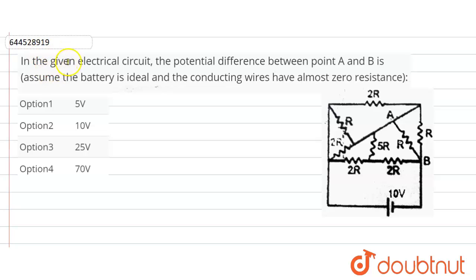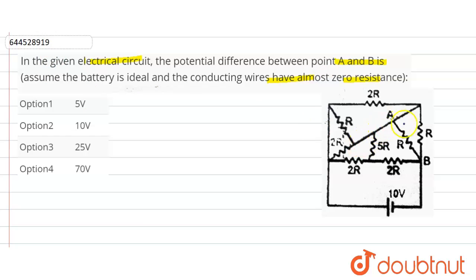In a given electrical circuit, the potential difference between A and B is to be found. Assume the battery is ideal and conducting wires have almost zero resistance. So first we will reduce this circuit.